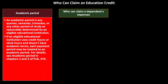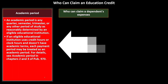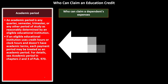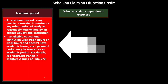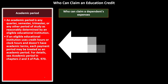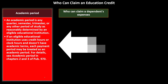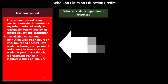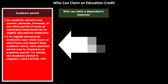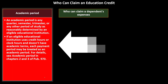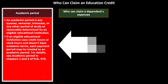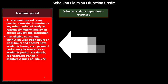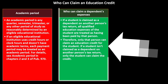An academic period is any quarter, semester, trimester, or other period of study as reasonably determined by an eligible educational institution. If an eligible educational institution uses credit hours or clock hours and doesn't have academic terms, each payment period may be treated as an academic period. For details, see academic period in chapters two and three of Publication 970. Most educational institutions are somewhat standardized, but if yours isn't, you'll need to dig into that further.